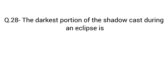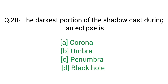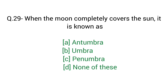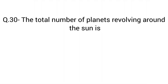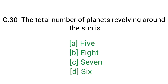Question number 28: The darkest portion of the shadow cast during an eclipse is? Right answer — Umbra. Question number 29: When the moon completely covers the sun, it is known as? Right answer — Umbra. Question number 30: The total number of planets revolving around the sun is? Right answer — 8.